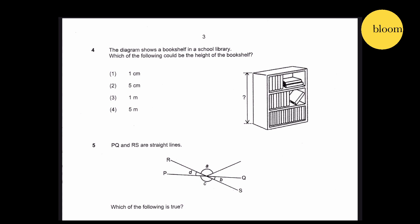Question 4: The diagram shows a bookshelf in a school library. Which of the following could be the height of the bookshelf? 1 cm is too short, 5 cm is too short, so it could be between 1 meter and 5 meters. As you can see, this shows the height of 3 books stacked. Therefore, 1 meter will be the answer.